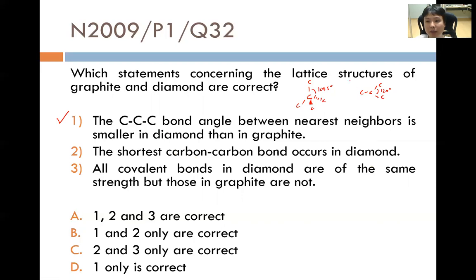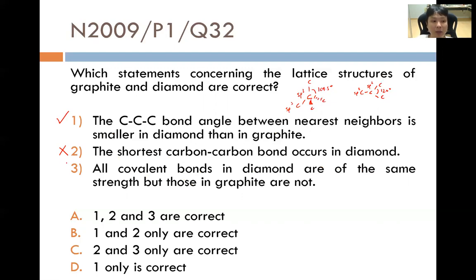Statement 2: The shortest carbon-carbon bond length occurs in diamond. In diamond, the C-C bond is between two sp3 carbons, while in graphite it is between two sp2 carbons. The sp2 orbital has 33% s-character compared to 25% for sp3, so the sp2 orbital is shorter. Hence the shorter C-C bond length occurs in graphite, not diamond. Statement 2 is wrong. Statement 3: All covalent bonds in diamond are the same strength, but not in graphite. In fact, all C-C bonds within diamond are the same, and all C-C bonds within graphite are also the same strength. Statement 3 is false. Therefore only Statement 1 is correct, and the answer is option D.